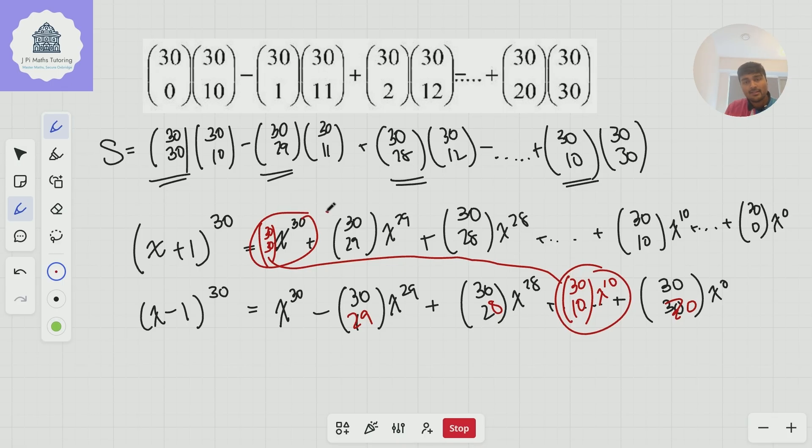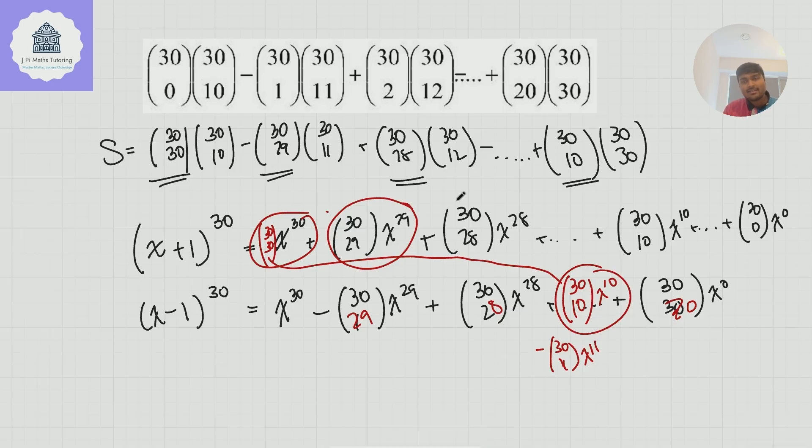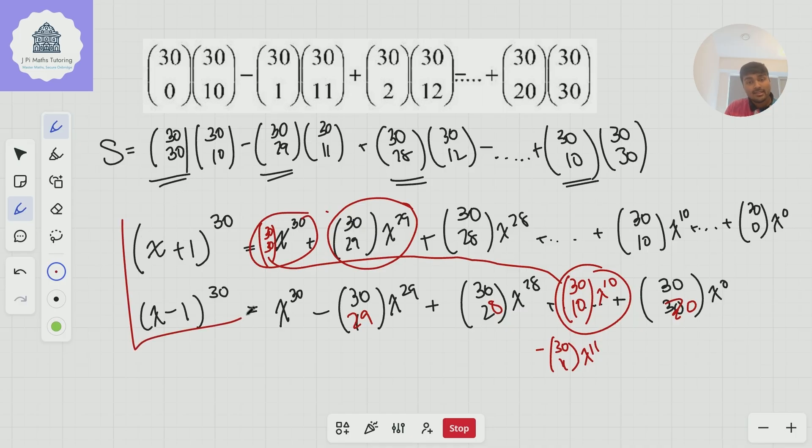If I multiply, to get my minus 30 choose 29 times 30 choose 11, I'm going to take my 30 choose 29 from here, x to the 29, and multiply it by the minus 30 choose 11, x to the 11 in this second sum. And by multiplying those together, I get another x to the 40. And so what I realize is that this s is simply the coefficient of x to the power of 40 in the product of these two things.